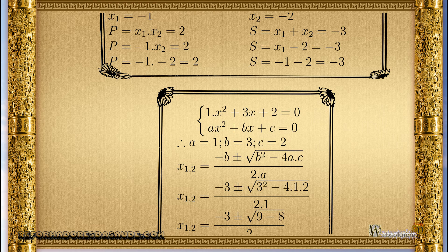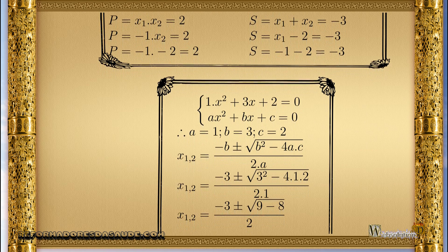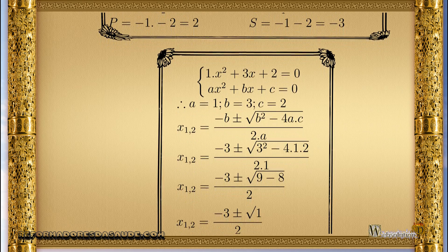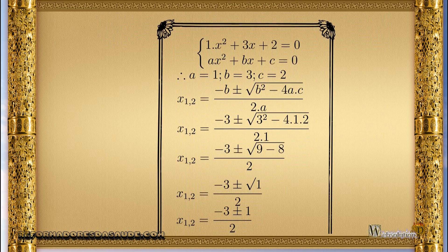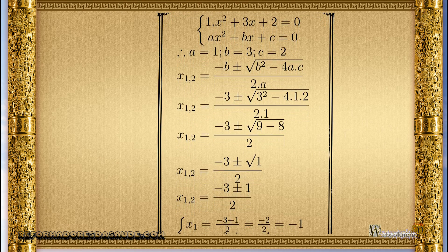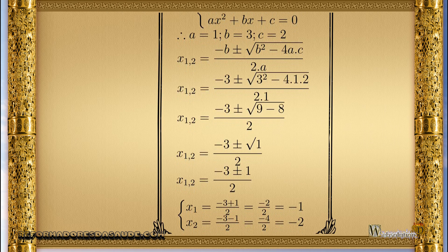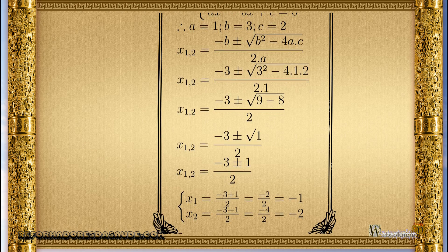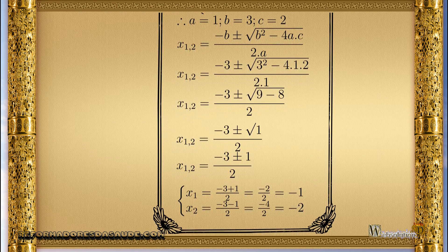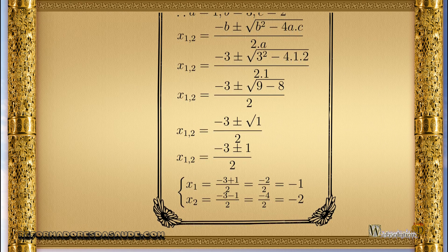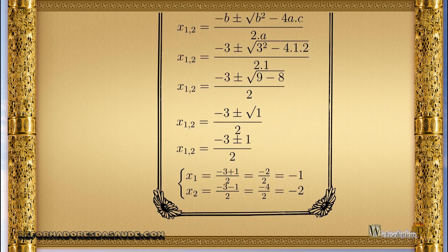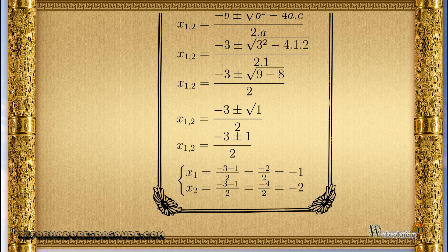Once we know these values, we simply replace them in the formula. The Bhaskara formula is just a formula for substituting values, so it is important to be very careful to replace them correctly. The plus-and-minus symbol means we use plus for one root and minus for the other. Solving the calculations gives us roots minus 1 and minus 2.